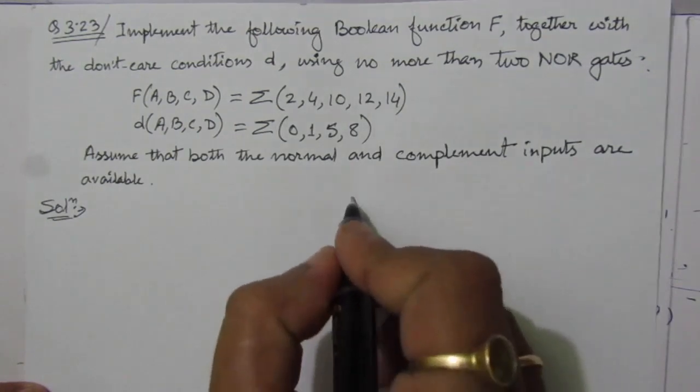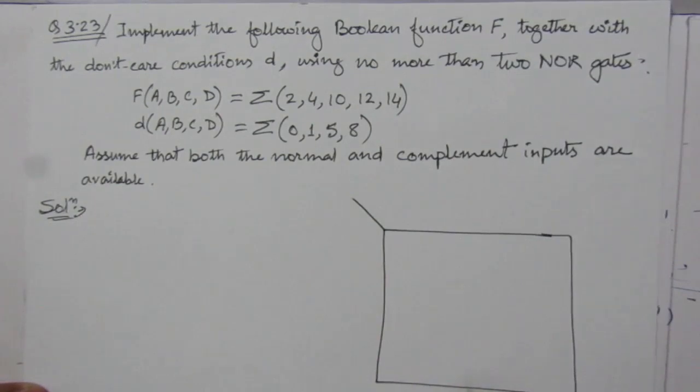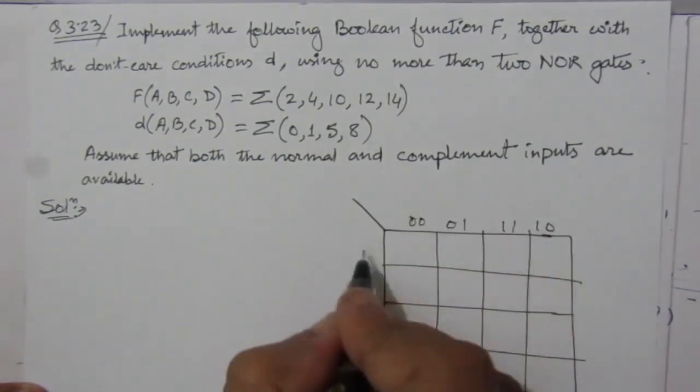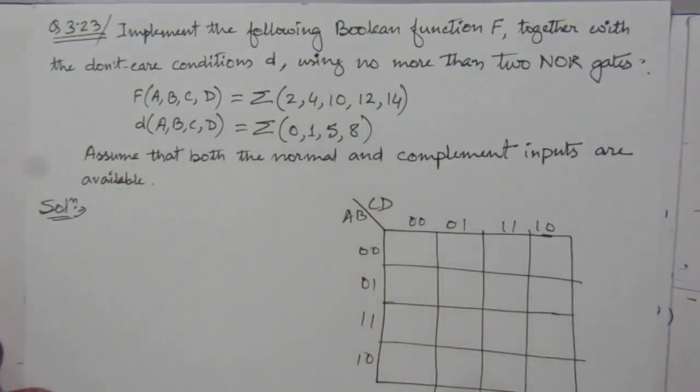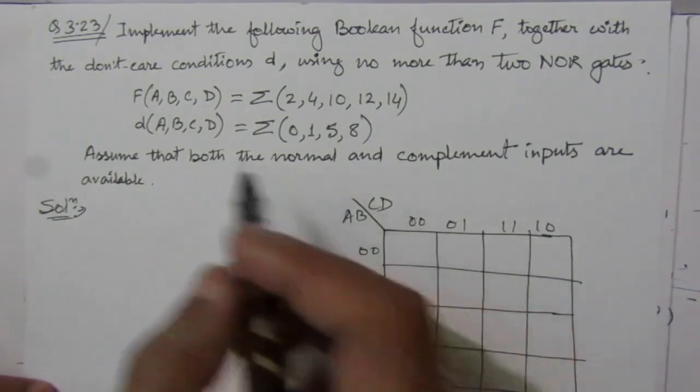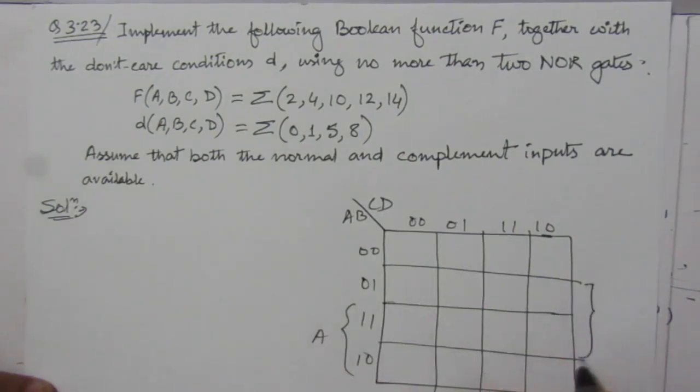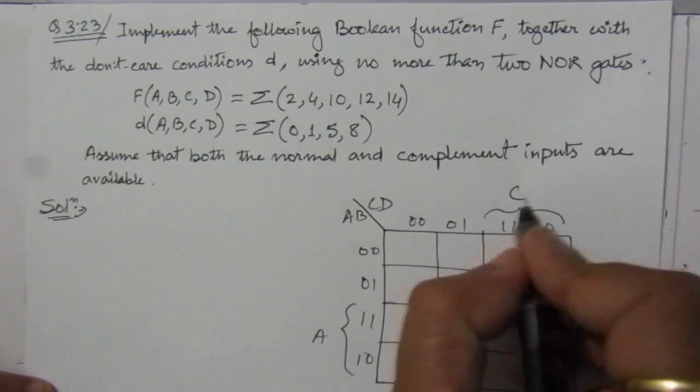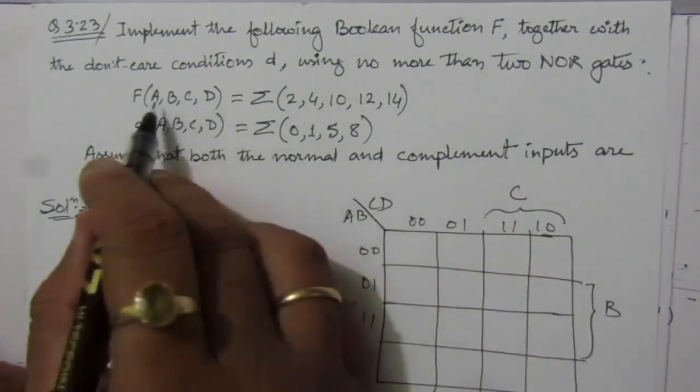The K-map will be a four-variable K-map. Let us fill up this table. Let us write down: this is A, this is B, this one is C, and this is D. Let us first fill up this function.